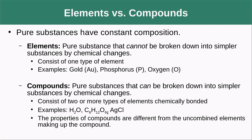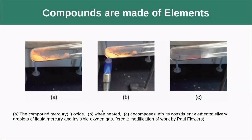Examples of compounds include water, sugar (C₆H₁₂O₆), and gold chloride. The properties of compounds are different from those of the uncombined elements making them up, which is how we get such a myriad of different things in the real world even from a finite number of elements. Here's an example of a compound being broken down over a Bunsen burner: when we heat mercury oxide, it decomposes into liquid mercury at the bottom and oxygen gas that fills the container.